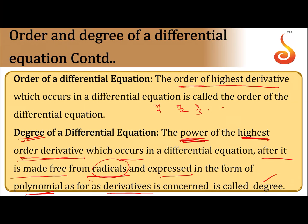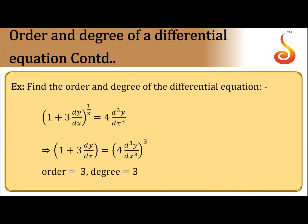Example: [1 + 3(dy/dx)]^(1/3) = 4·(d³y/dx³). By removing the fraction — cubing both sides — we get a polynomial in derivatives. The highest order is 3, and the exponent of that highest-order derivative is also 3, so the degree is 3 and the order is 3.